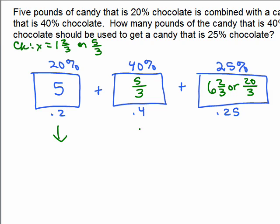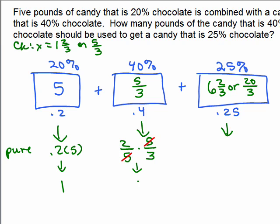Let's check how much pure chocolate we actually have in each container. We have 0.2 times 5, which is the same as 1. Now we have 0.4 times 5/3. 0.4 means 4/10, which is the same thing as 2/5. That's 4/10 multiplying by 5/3. Notice how the 5's cancel? How convenient. So we've got 2/3 pounds of pure chocolate in this container.